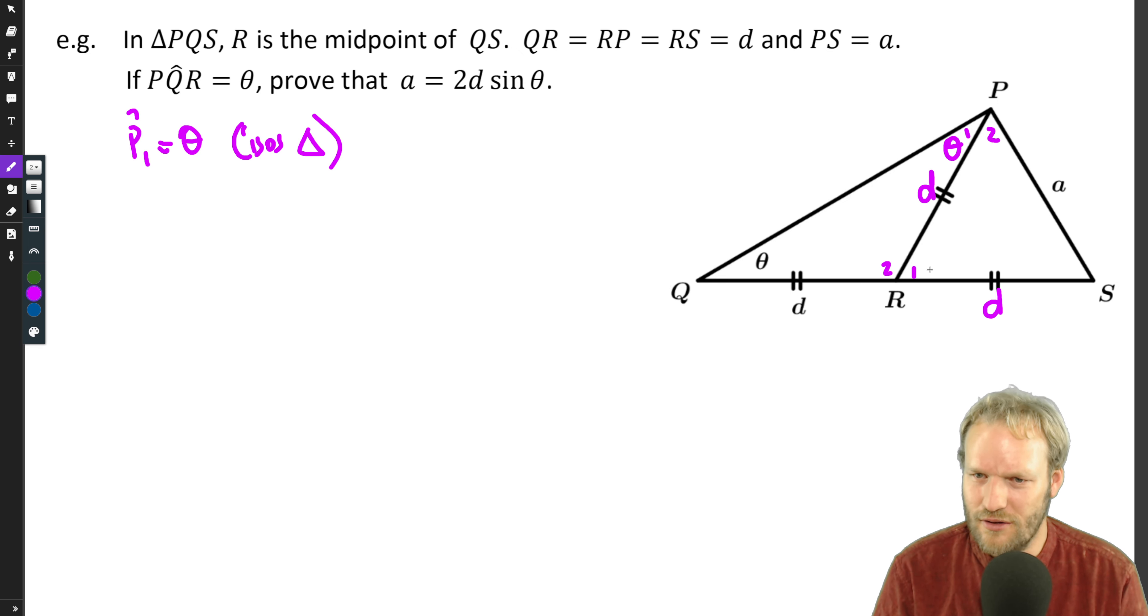Theta, theta, therefore R1 is easy to figure out as well. Exterior angle of the triangle says that R1 is 2 theta. So R1 is 2 theta because exterior angle of triangle.